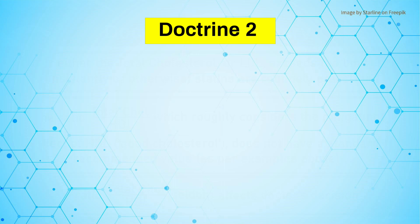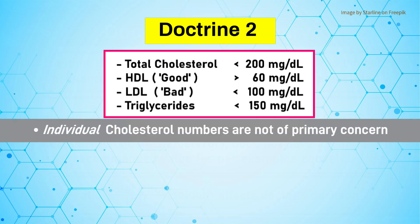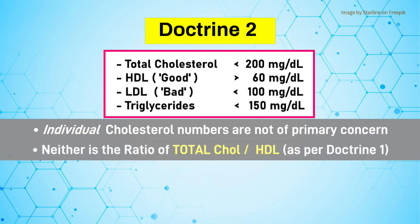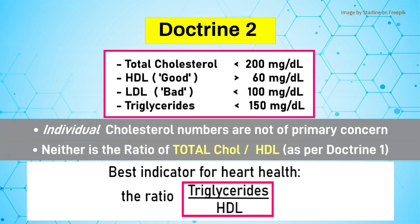In Doctrine 2, individual cholesterol numbers are not of primary concern, and neither is the ratio of total cholesterol to HDL cholesterol. Instead, the best indicator of heart health is the ratio of triglycerides to HDL cholesterol.